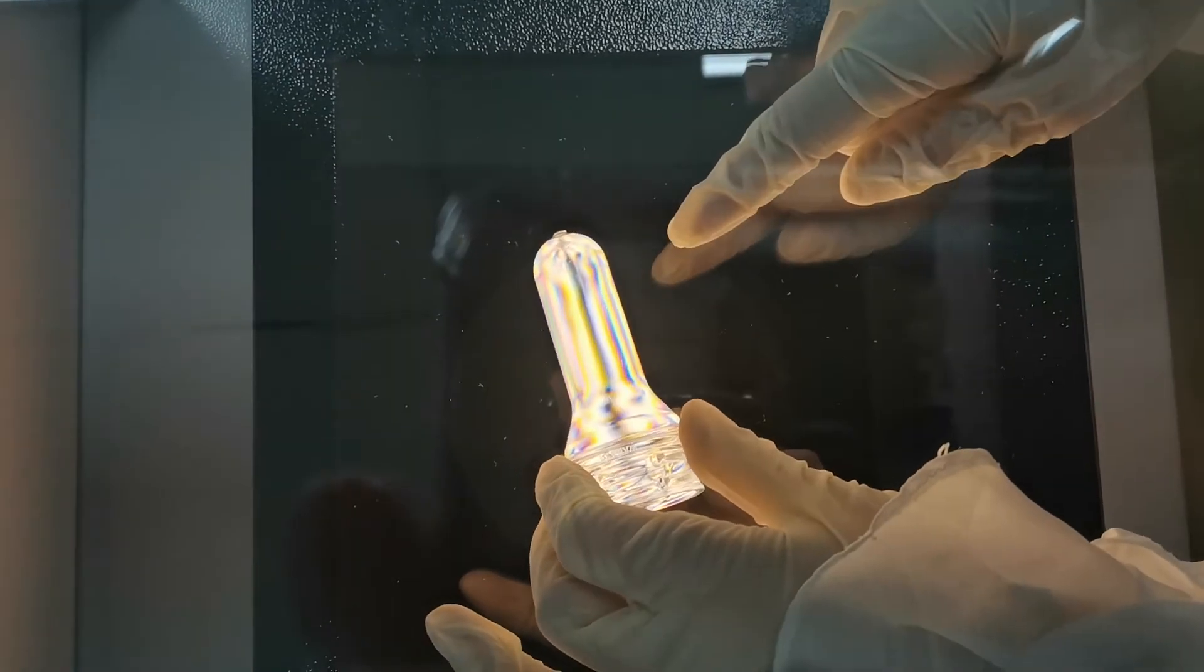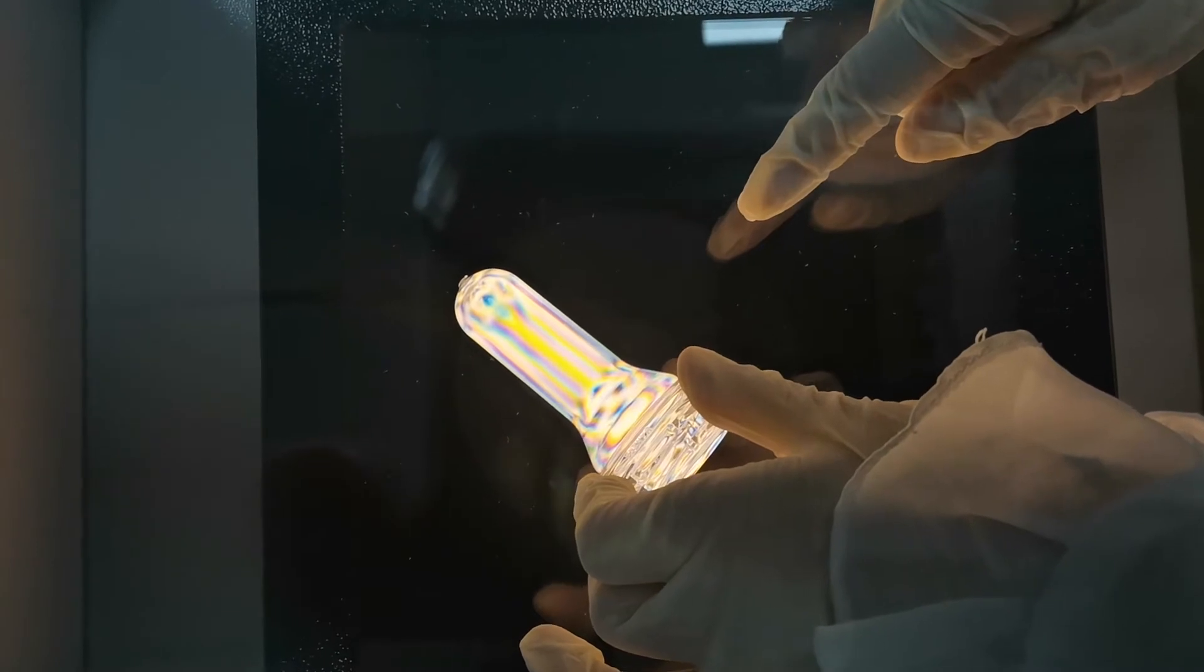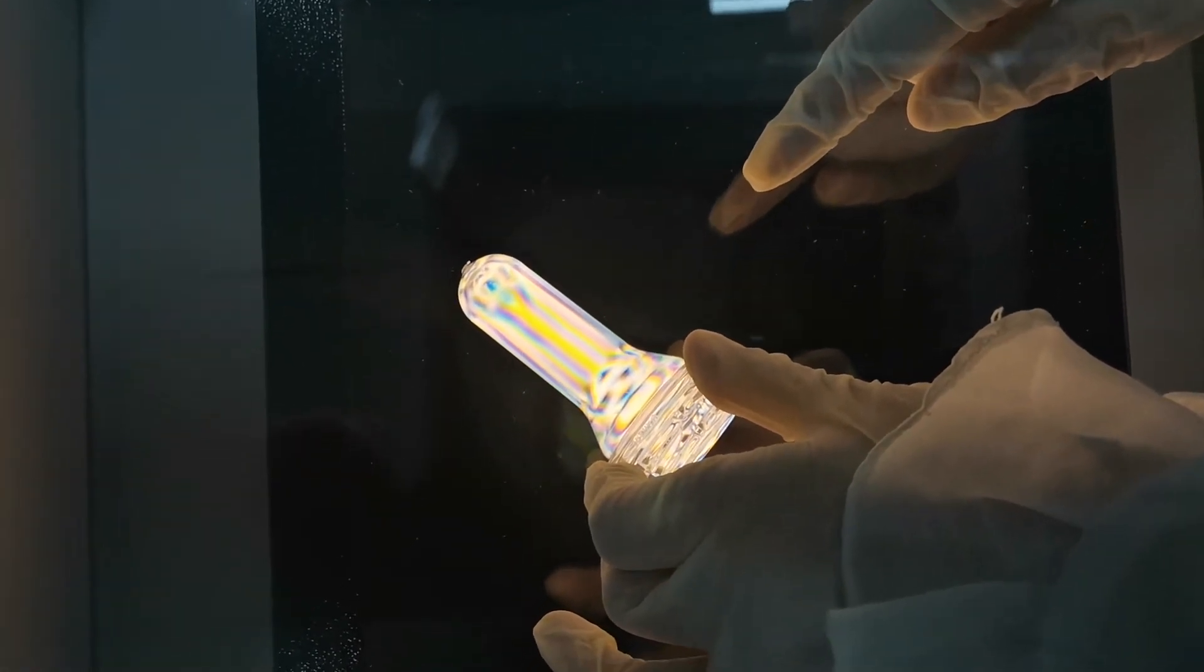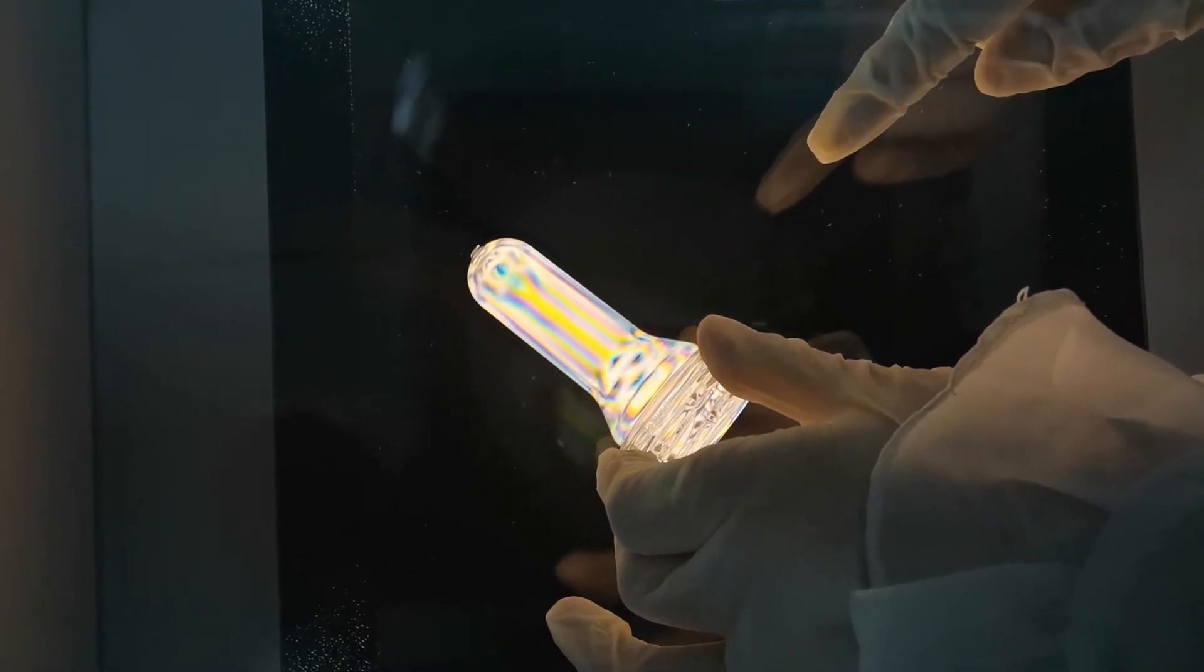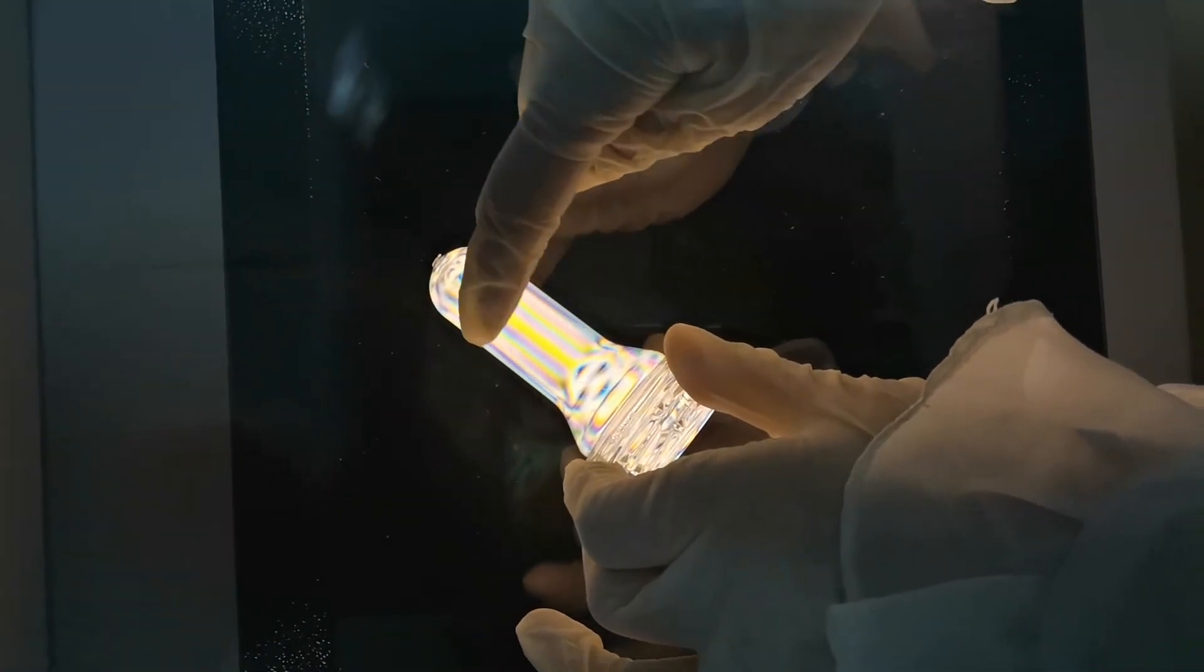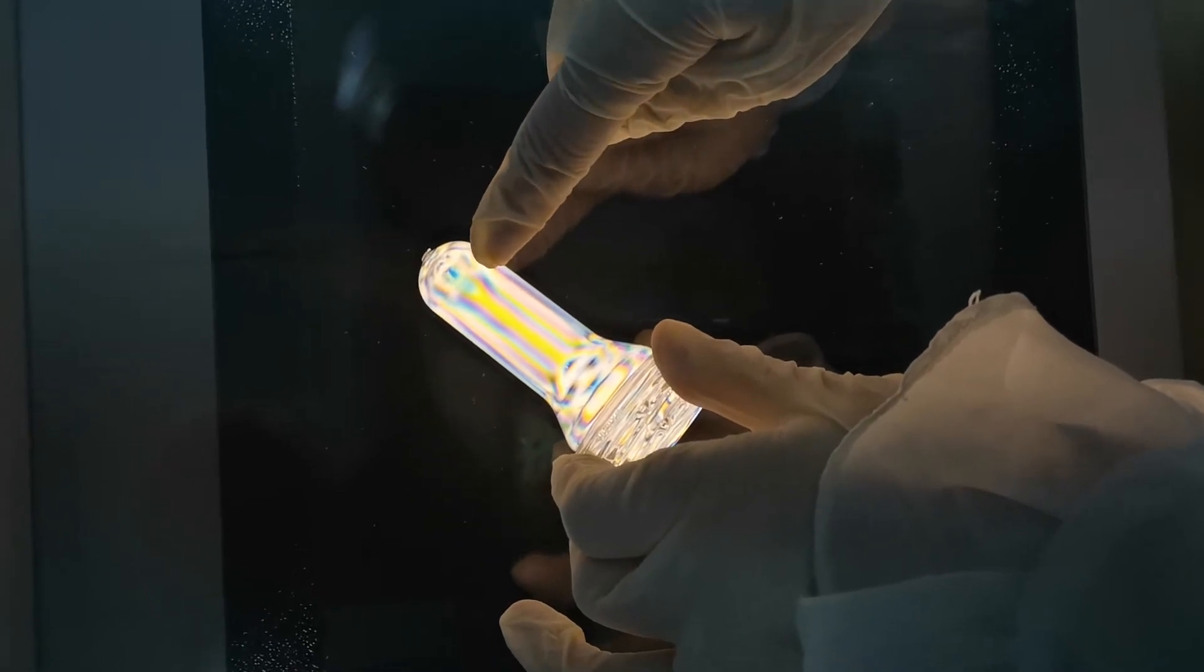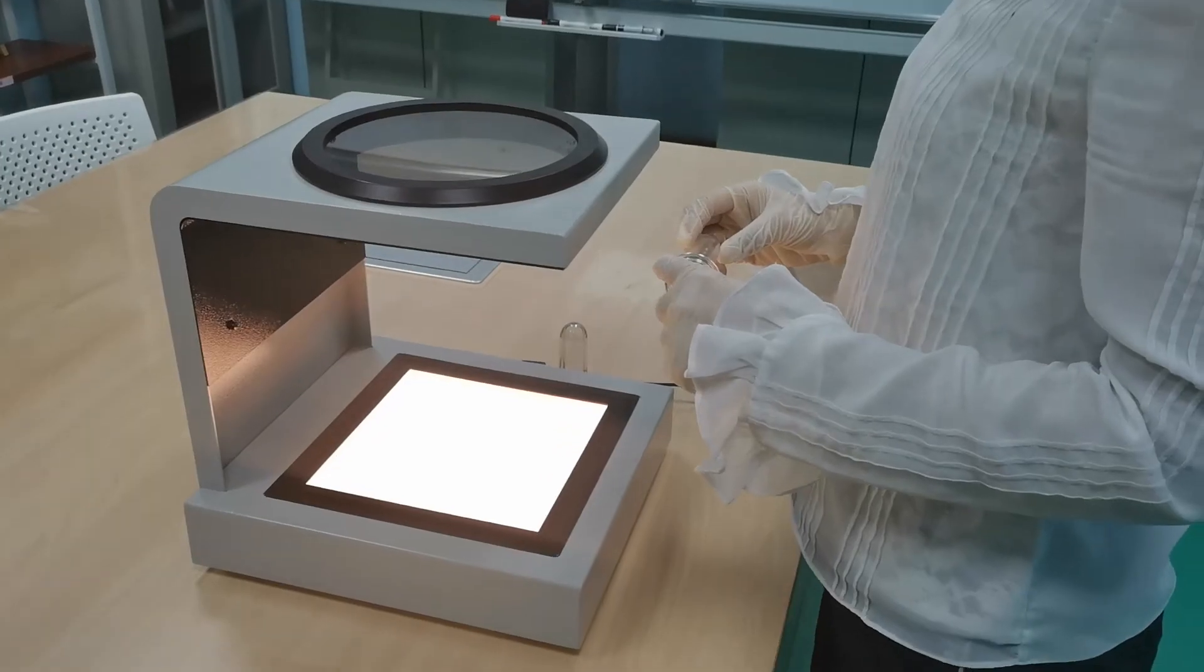Then, switch the preform slowly until it is about 45 degrees to the polarizing axis. If this is an optimum preform, we are supposed to see regular parallel flowlines on the sides of the preform. Unfortunately, we didn't find them.